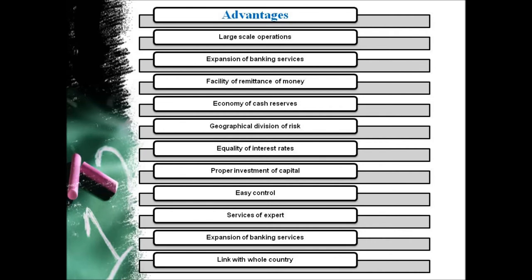Branch banking also provides remittance facilities. Remittance of funds from one place to another can be provided at cheaper rates under branch banking, as inter-branch indebtedness can be more easily adjusted than inter-bank indebtedness. Branch banking also helps in reducing disparities in interest rates. Branch banks increase the mobility of funds between various regions and bring about uniformity in interest rates over a wide area. Funds are transferred from regions where they are plentiful and demand is low to regions where they are scarce and demand is high, bringing money supply to equilibrium.